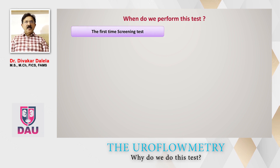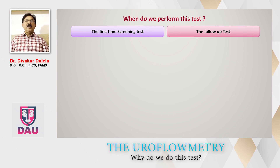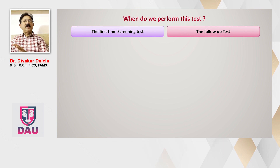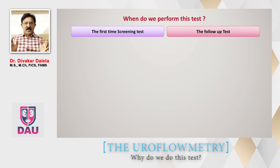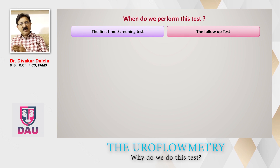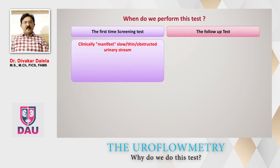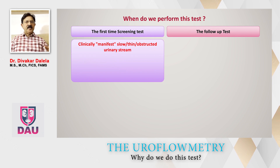When do we perform this test? There are two scenarios. First, it can be done as a screening test to find out what is happening to the lower urinary tract, or as a follow-up test after treatment has been given. For primary diagnosis, this test is very commonly used for patients who come with clinically manifest problems of the urinary stream — a slow stream, thin stream, or feeling obstructed when passing urine.